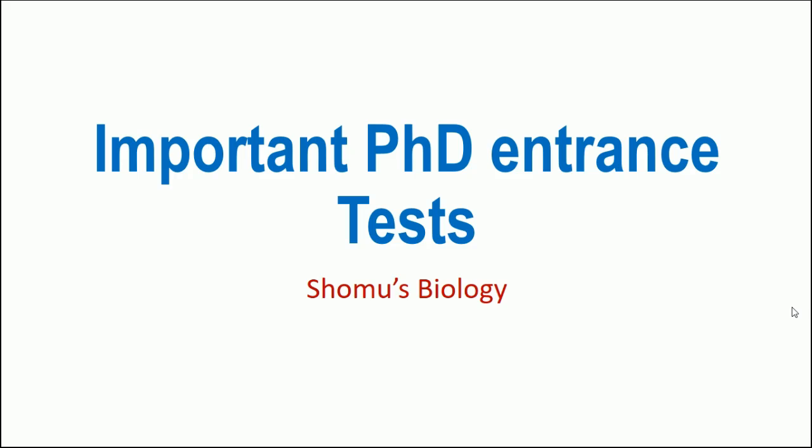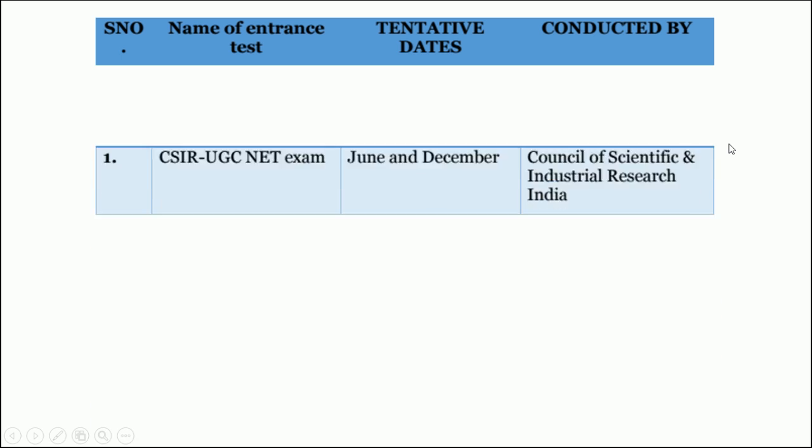Now we will see the list of important PhD entrance tests apart from CSIR UGC NET because I told you that there are many other options as well. Here we are going to see the number of different institutes and the approximate month when they start to provide the notification for the exam, as well as the institute and under which specific governing body it's conducted.